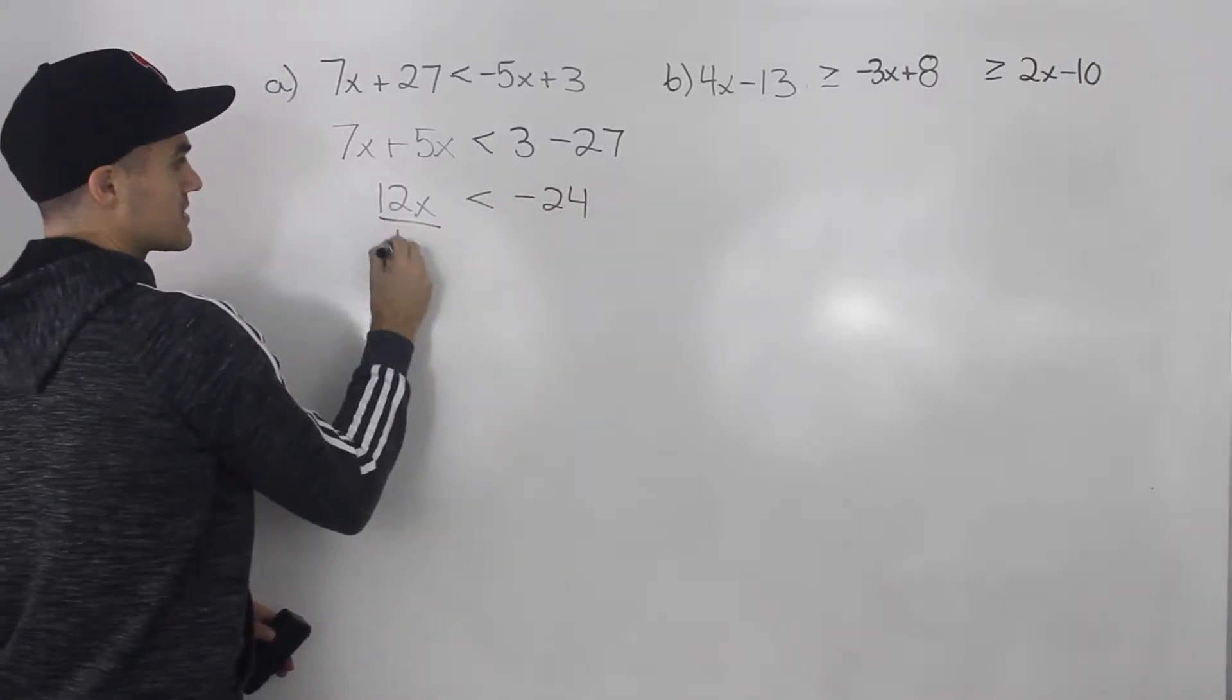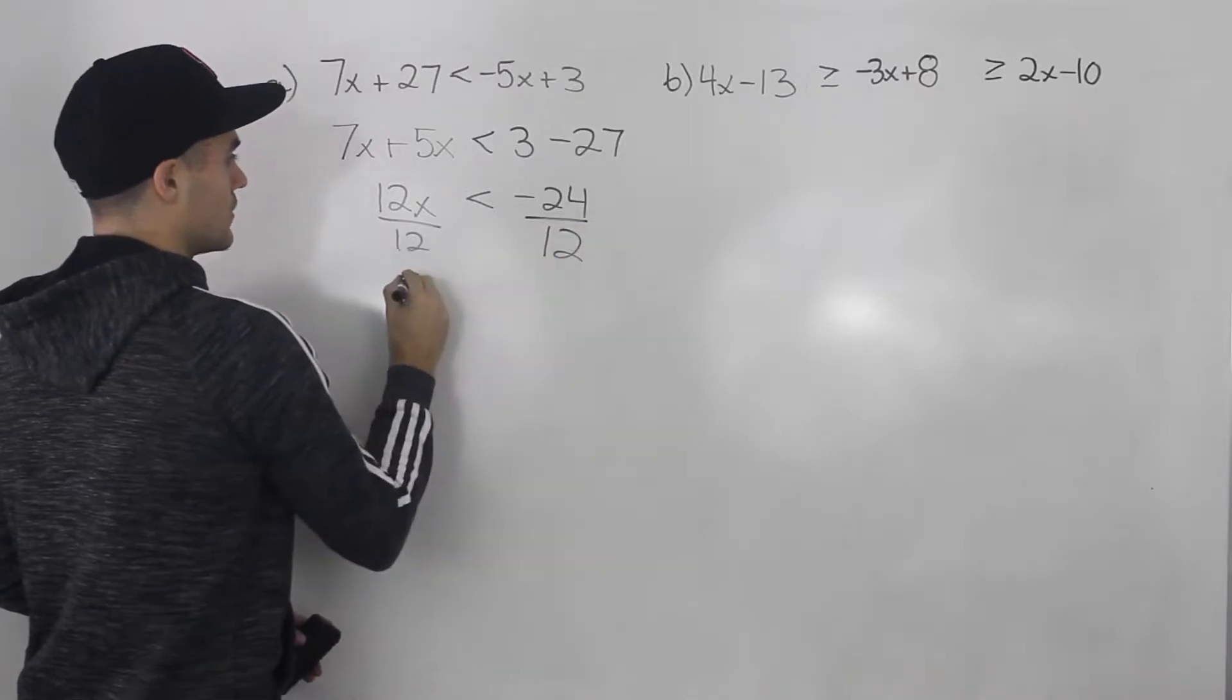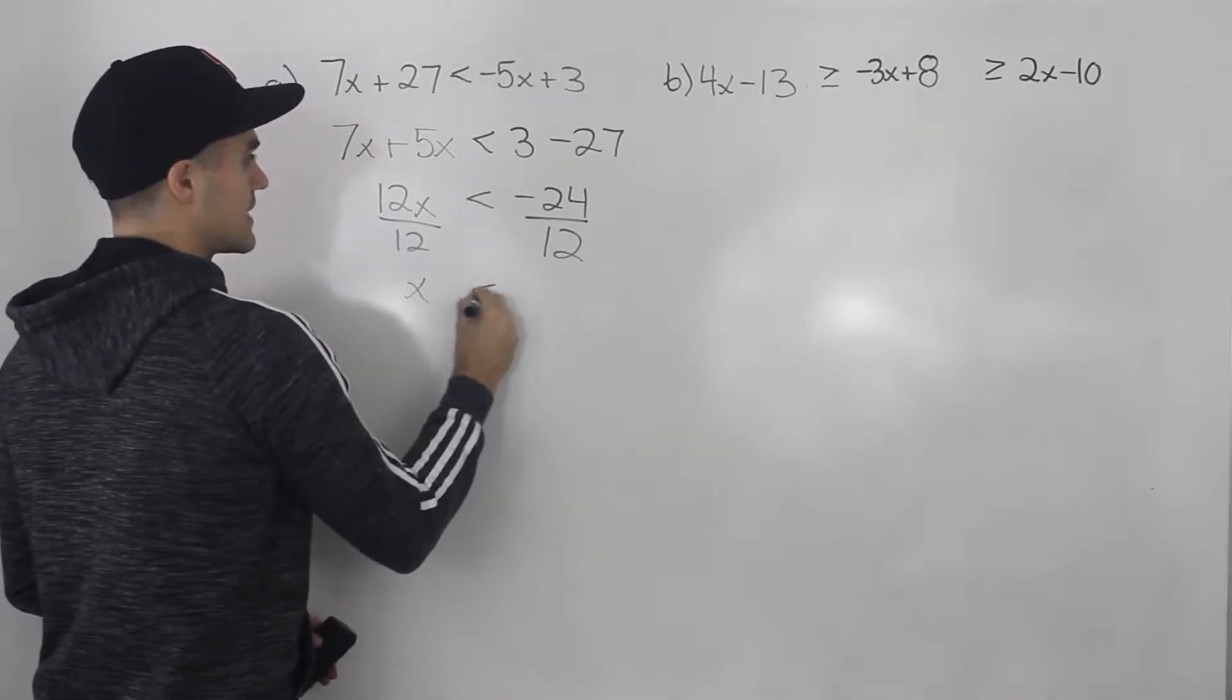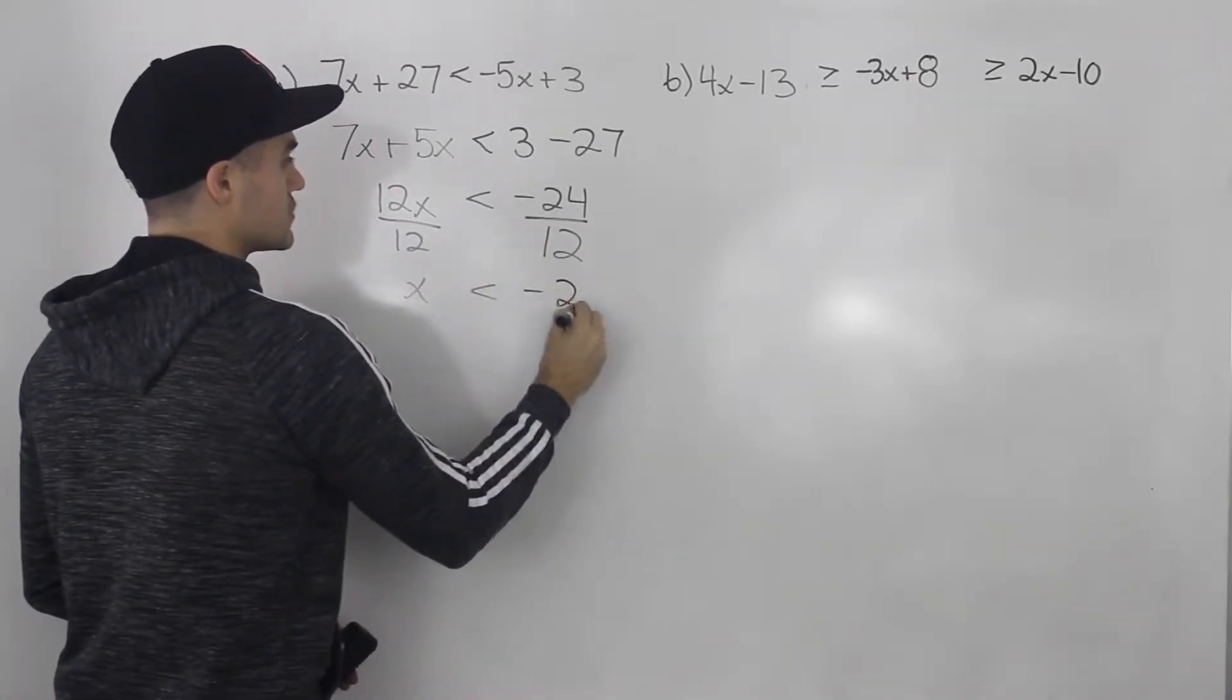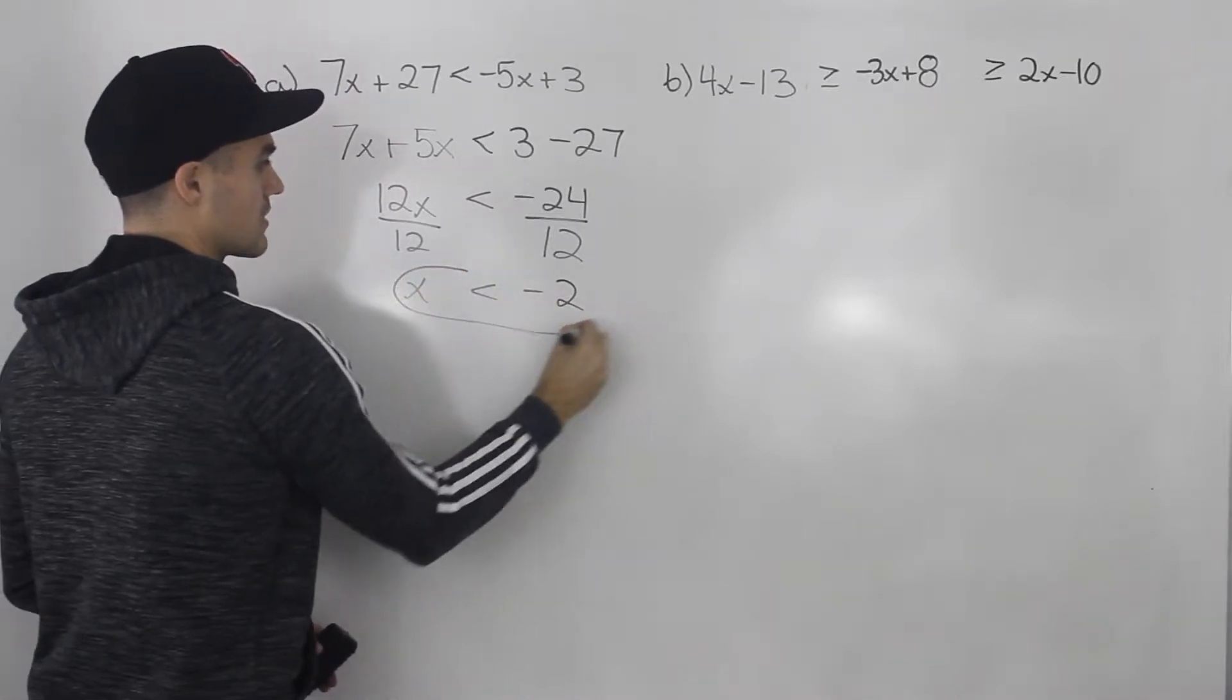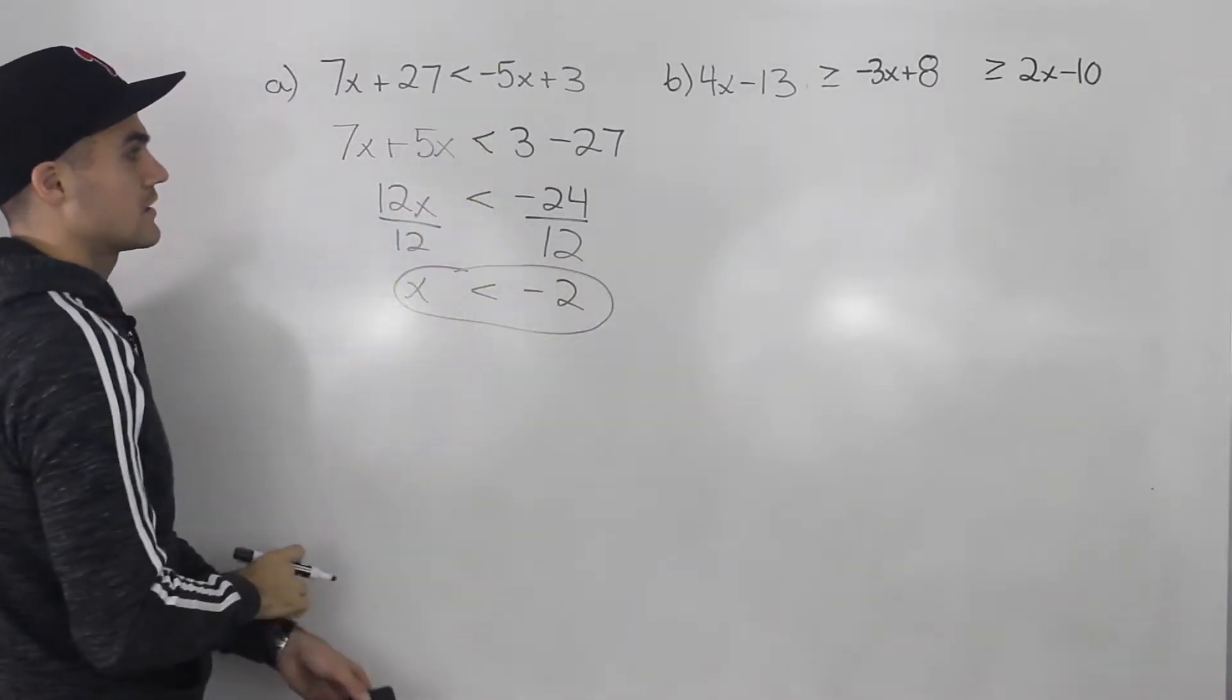And then to isolate for this x, we divide by 12. So we'd have x is less than negative 2. So that is our answer for this inequality here.